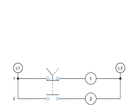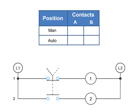Contact position on a selector switch can easily be illustrated using truth tables. This truth table illustrates the manual or automatic contact positions of a two-contact selector switch. Each contact on the line diagram is marked A or B. The positions of the selector switch are marked MAN for manual or AUTO for automatic. The truth table can be used to easily interpret what contacts are closed for a particular position.